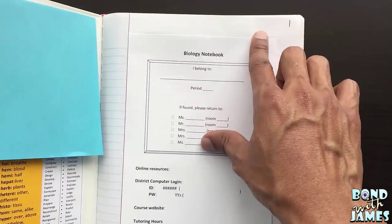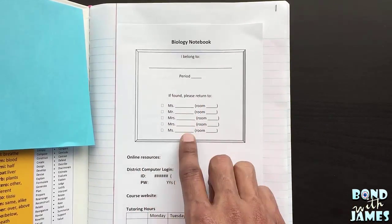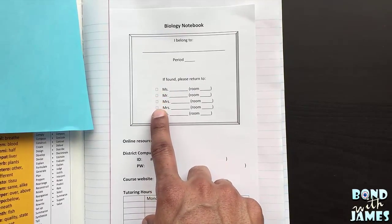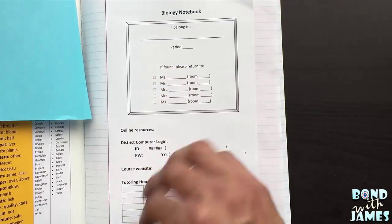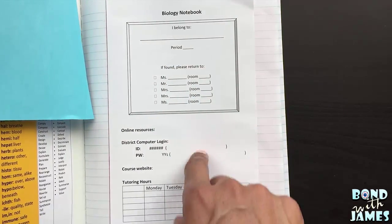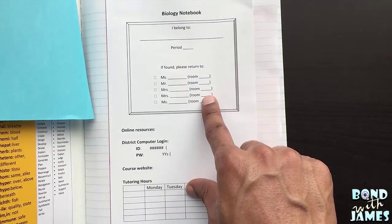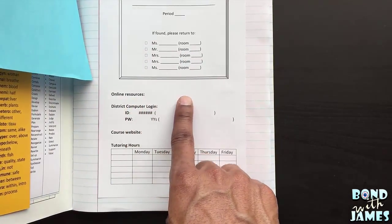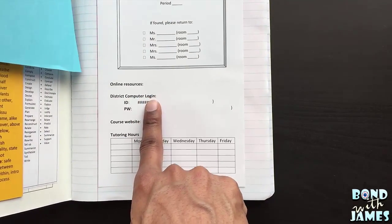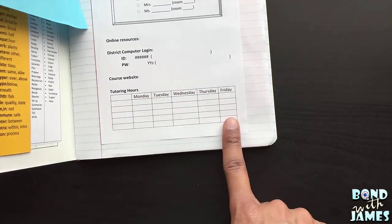Each student will get a one-page sheet that says biology notebook I belong to, student name, the period. If found, please return to. And the students would check off whichever teacher they have and the room number as well. Before I printed this, I whited everything out so that just for confidentiality reasons. And so this wouldn't be blank. This would actually have all the teachers' names and all the room numbers here. It would also have the online resources we wanted the students to use, how they would log into their district computers, our course webpage, and then all the teachers and their tutoring hours.